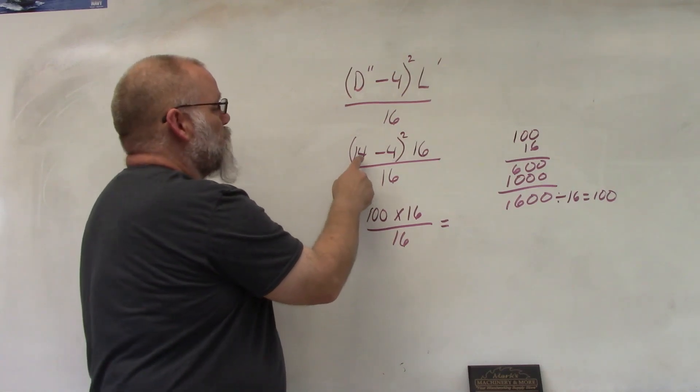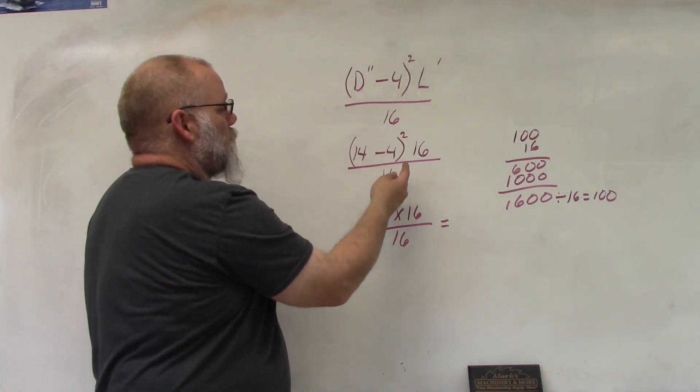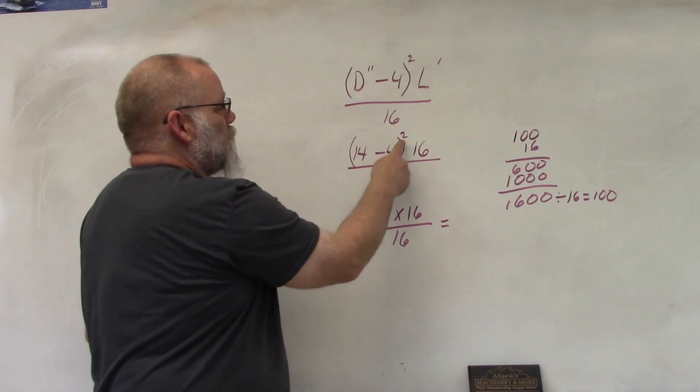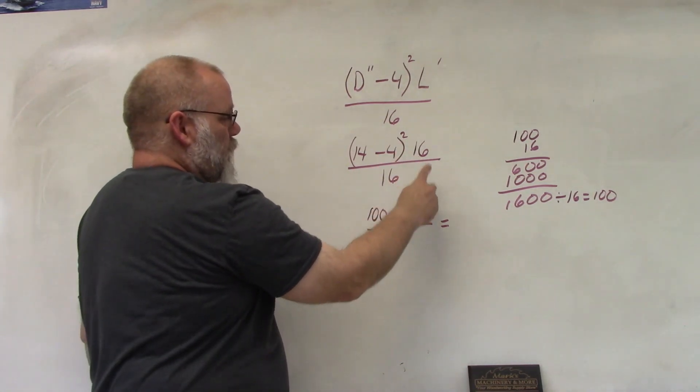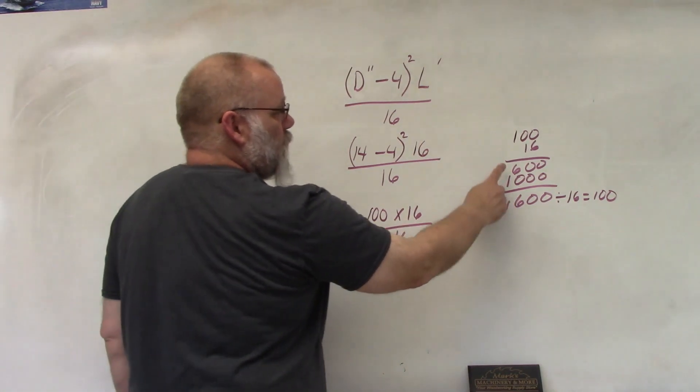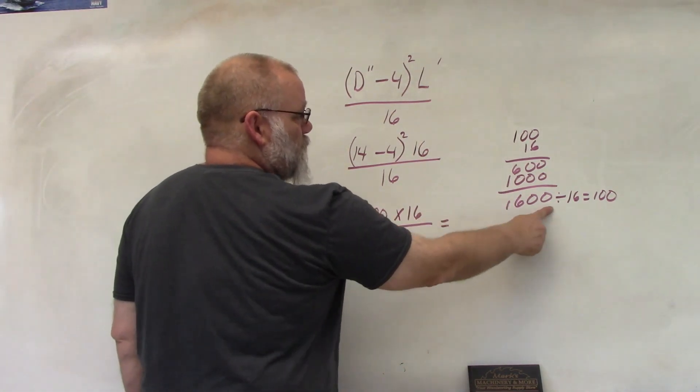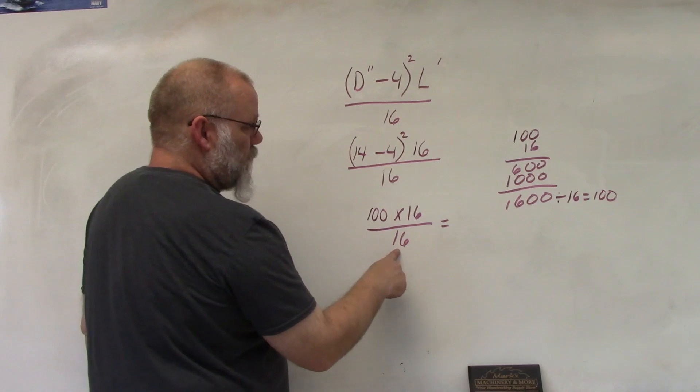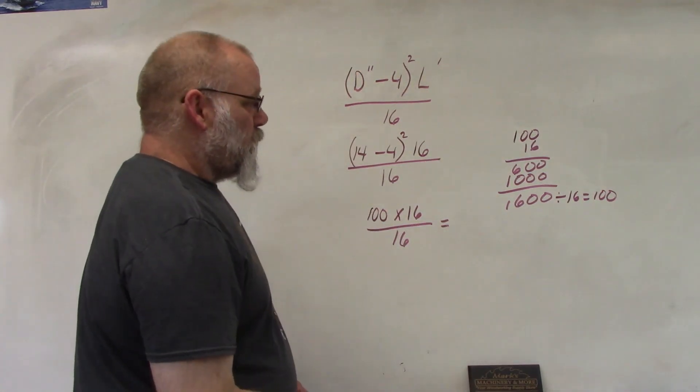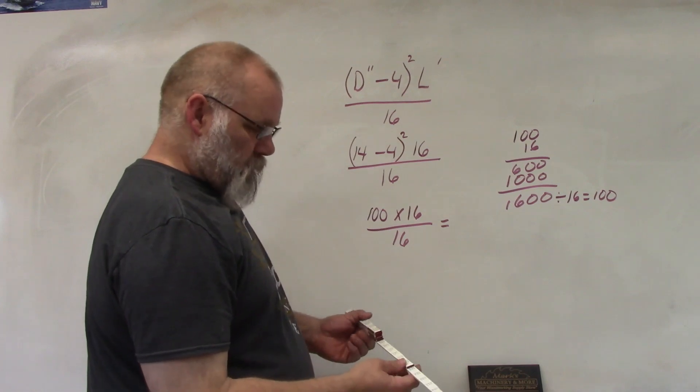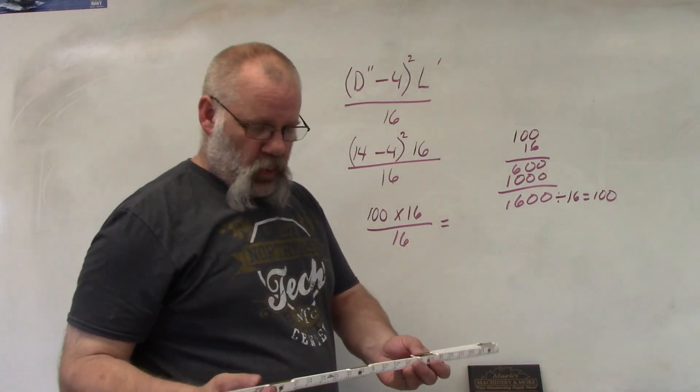So 14 minus 4 is 10, 10 squared is 100 times 16. Over here we got 100 times 16 gives me 1600, divided by 16 gives me 100 board feet. And then if you look on your rule, you come over to 14, you flip it over till you read 16 feet...